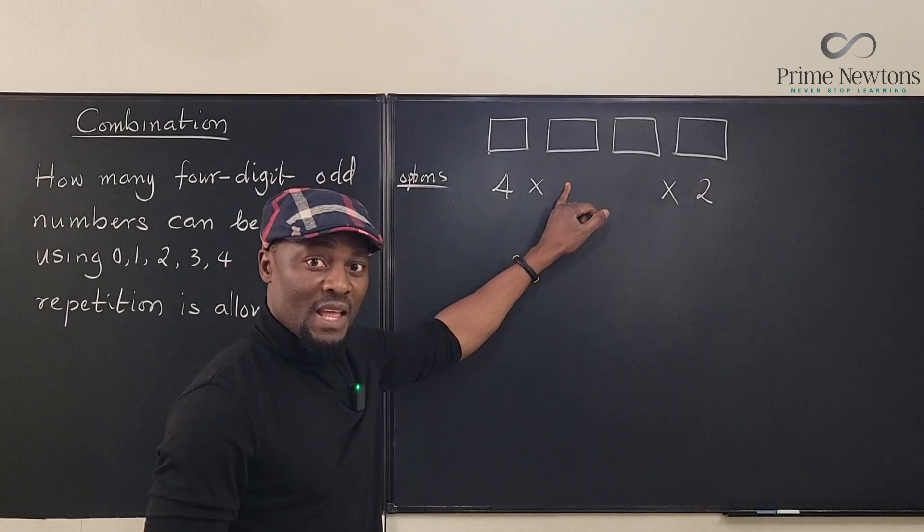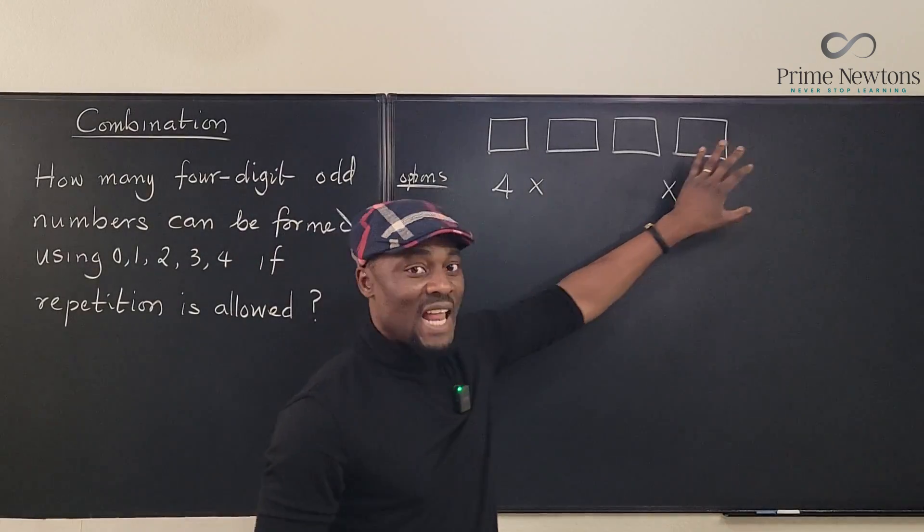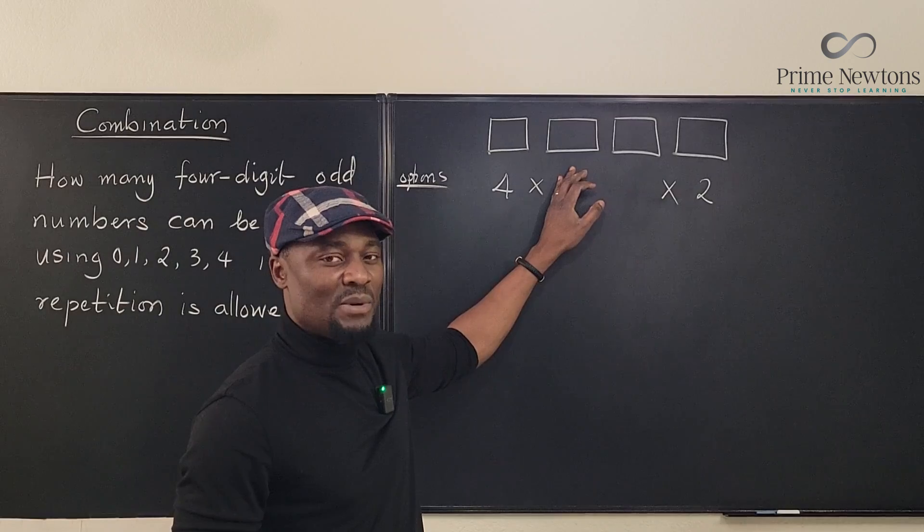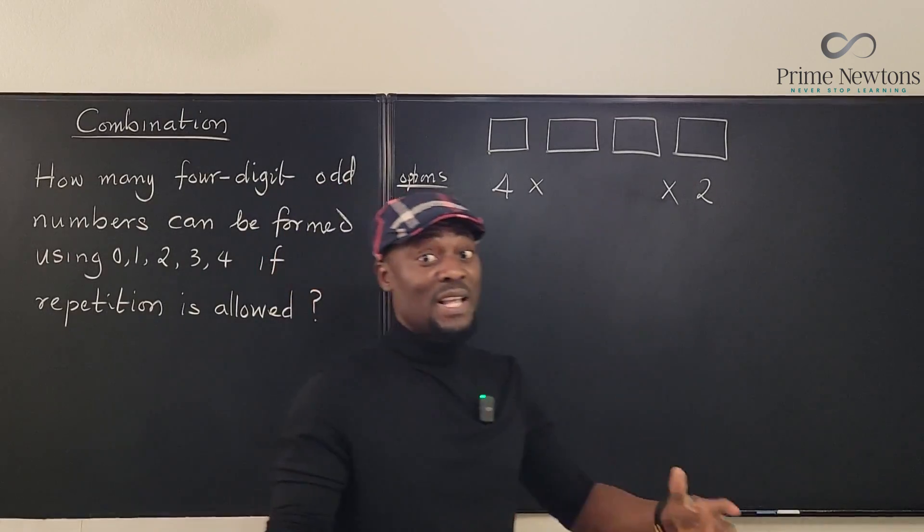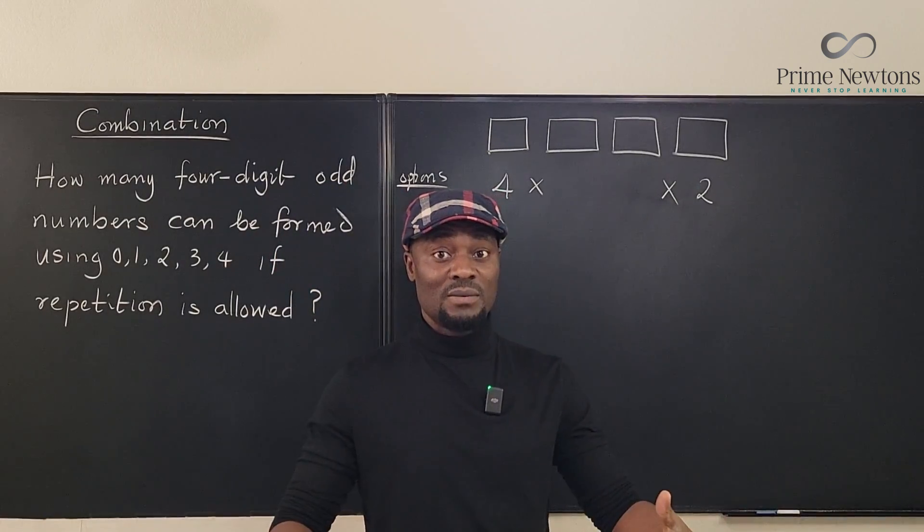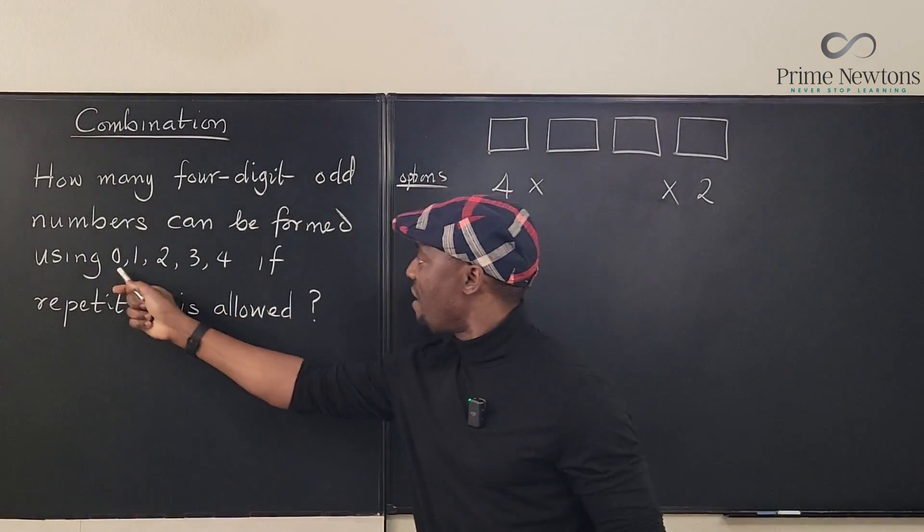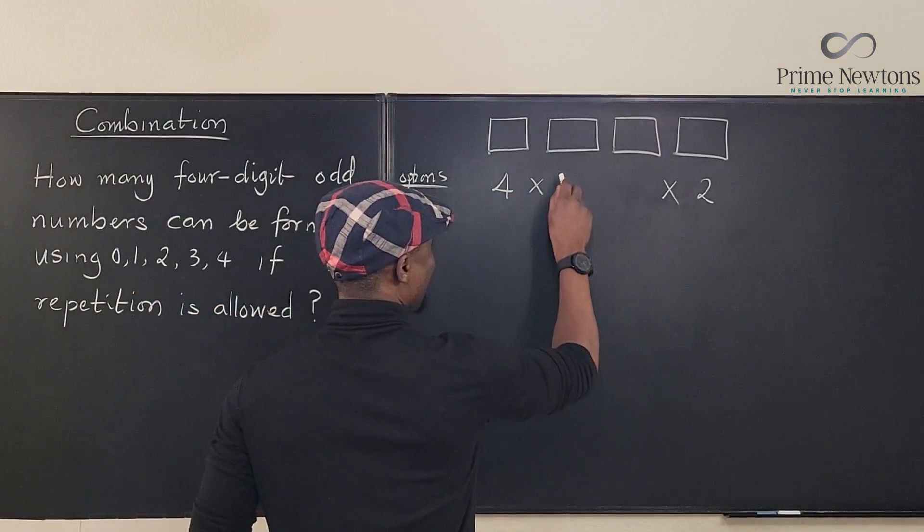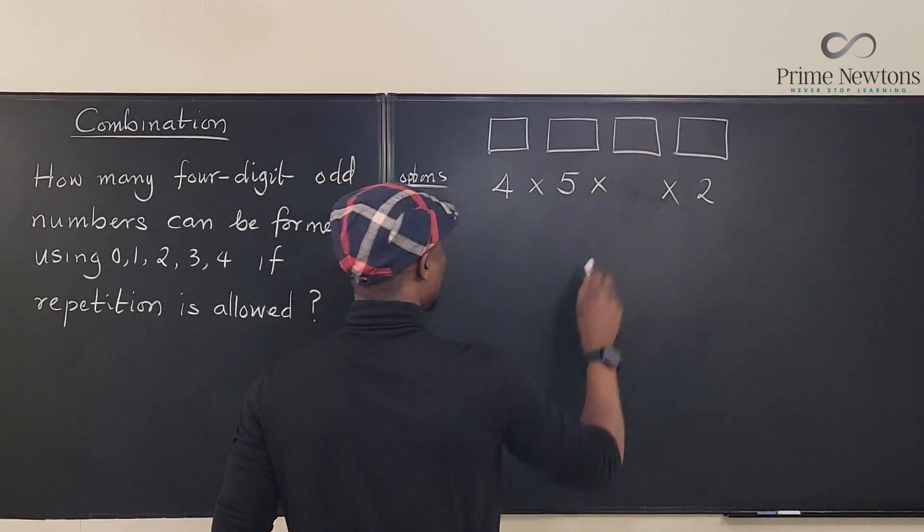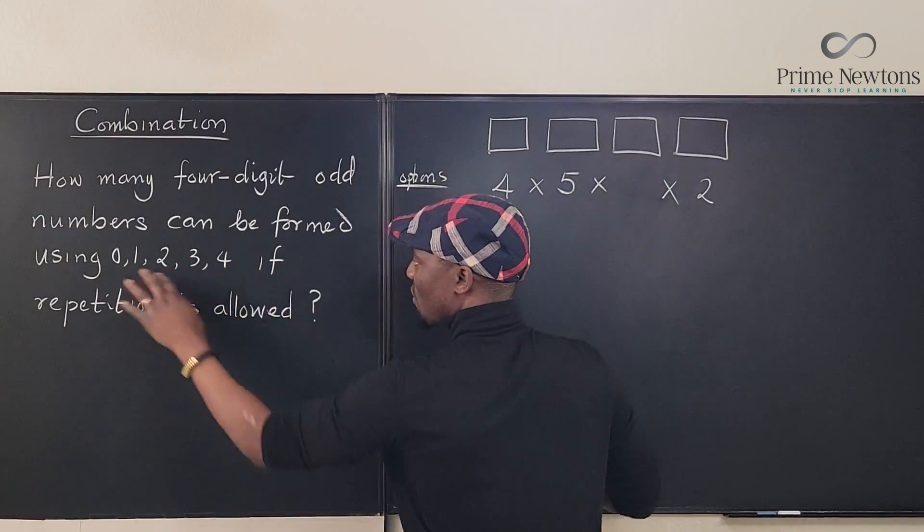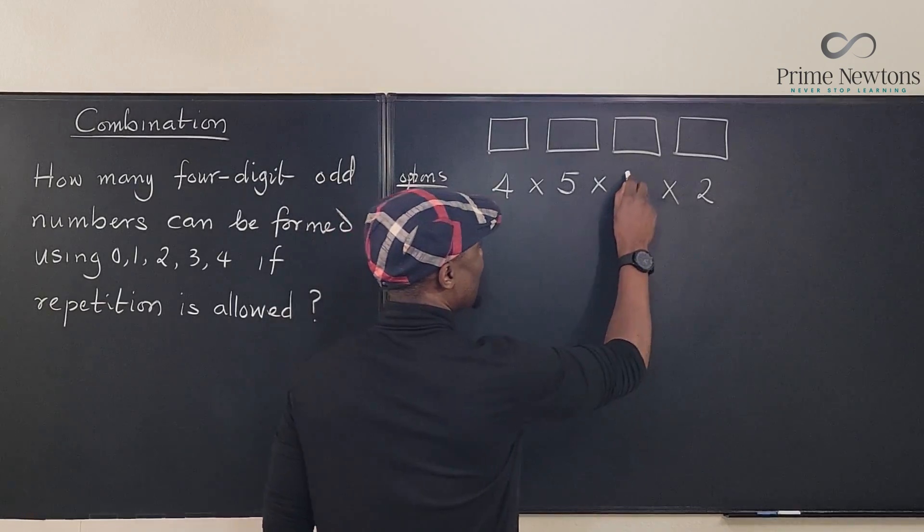So let's go here. Now we have dealt with the last digit and the first digit. The second digit can be any number: it can be 0, it can be 1, 2, 3, or 4, right? Because repetition is allowed and zero is no longer a problem, so we have five options. And for the last one, the third digit, we can still repeat anything. We have five options.